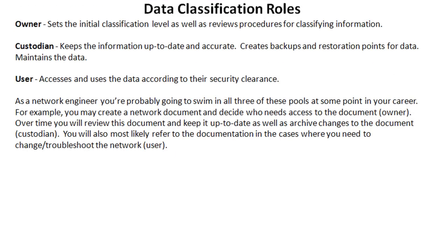The owner is going to set up the initial classification level and review the procedures for classifying information. They may not be directly updating documents for accuracy, but they'll define what constitutes a confidential document versus a secret document versus a top secret document. The custodian is the person that keeps the information up to date and accurate, and is in charge of backing up that information and creating restoration points for that data — basically, maintaining the data. The user is, pretty obviously, the person who accesses that data according to their specific security clearance.